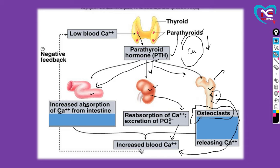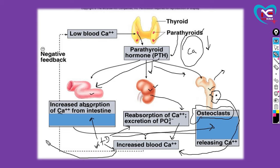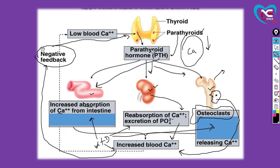Jab aapke blood mein calcium level maintain ho jaata hai, toh vitamin D release hota hai. Vitamin D kya karta hai? Pahli cheez toh absorption mein help karta hai - intestine mein bhi, kidney mein bhi, bone mein bhi. Plus, jab aapka calcium level sufficient ho jaata hai, toh vitamin D ek negative message transfer karta hai. Negative message ka matlab kya hua? Ki ab hume calcium nahi chahiye - calcium sufficient ho gaya. Yeh negative message aapke parathyroid gland mein jaata hai aur parathyroid gland PTH ko release karna kam kar deti hai. Is tarah se normally kaam chalta hai.